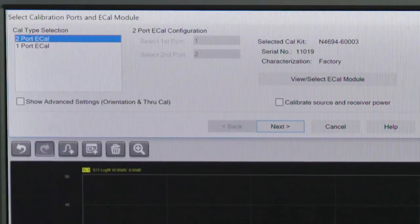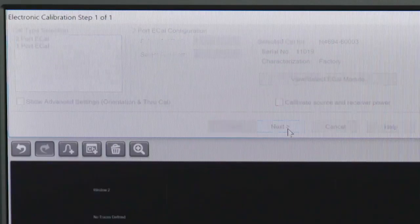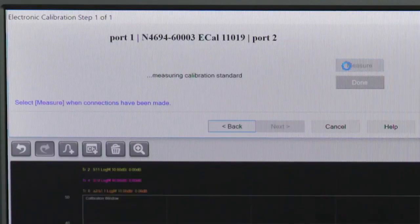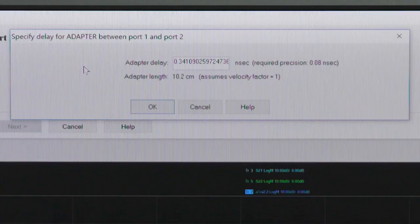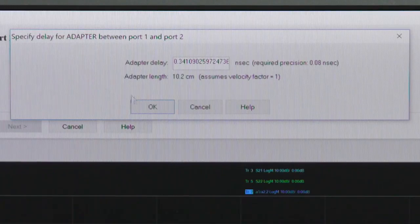We're going to do 2-port E-cal and leave the default settings. Select Measure. Once the calibration is complete, you will see a message like this pop up on screen showing that the calibration has been saved to the channel.